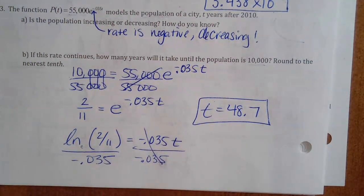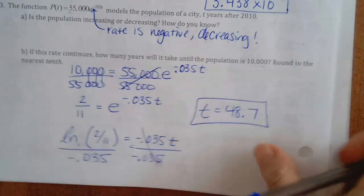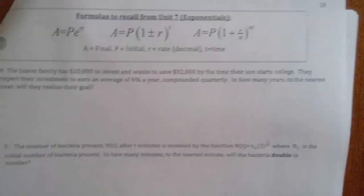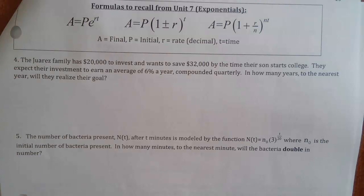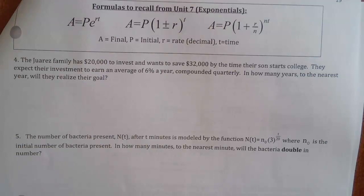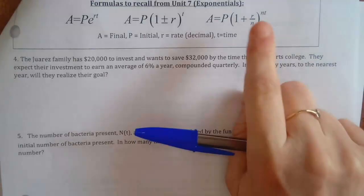Next we'll bring back some old friends from earlier in the year. Recall from Unit 7 our exponentials unit: we have PERT, the middle formula we used yesterday, and if it says compounded monthly, weekly, or semi-annually — something like that — that's the one with the n.